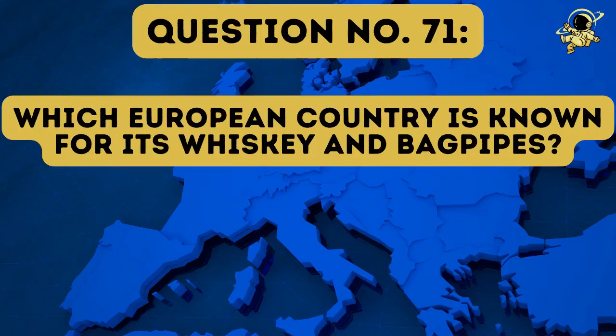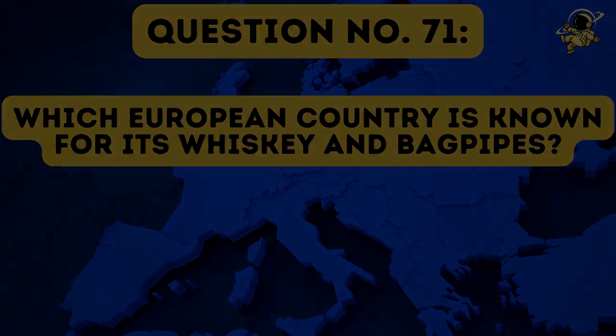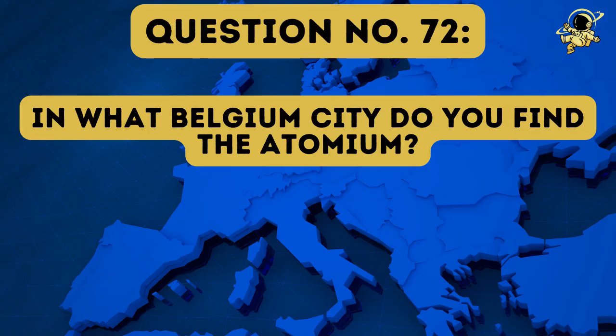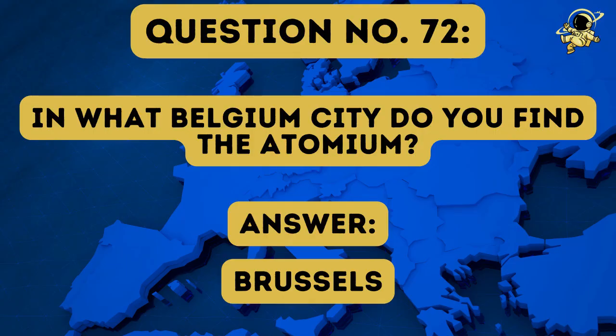Question number seventy-one: Which European country is known for its whiskey and bagpipes? And the answer to question number seventy-one is of course Scotland. Question number seventy-two: In what Belgian city do you find the Atomium? The answer to question number seventy-two is Brussels.